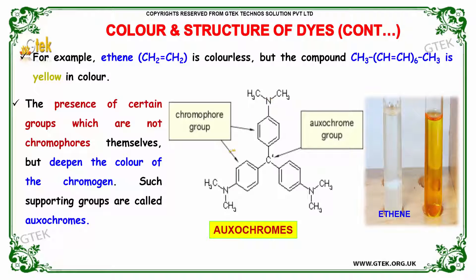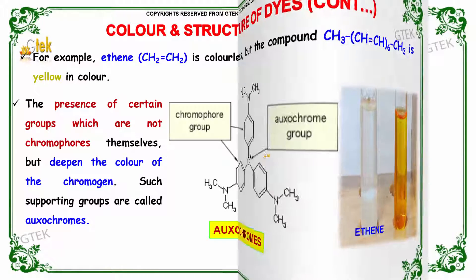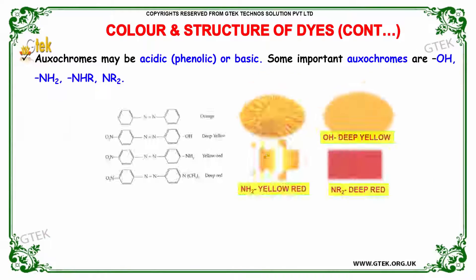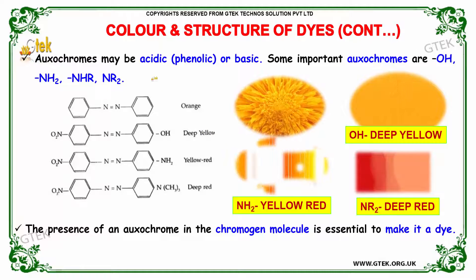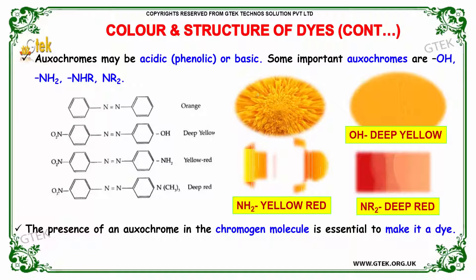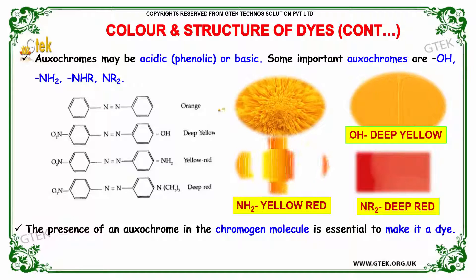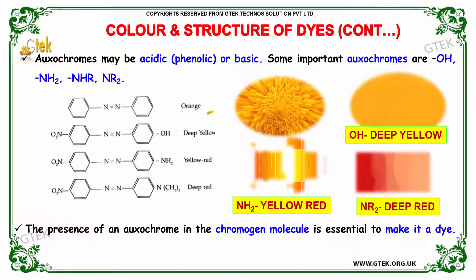The presence of certain groups which are not chromophores themselves but deepen the color of such chromogens — such supporting groups are called oxochromes. These are the planar structure of an oxochrome. You can see here this is the chromophore group present and this is the C+ ion. Oxochromes may be acidic or basic, but some important oxochromes are OH-, NH2, NHR, and NR2.